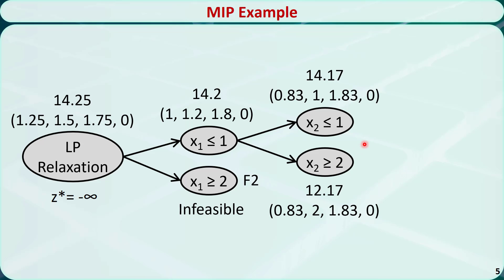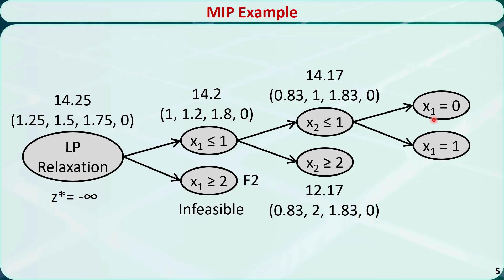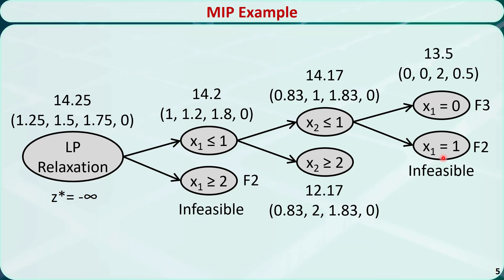Let's solve these two subproblems — these are their optimal solutions. Neither of the two subproblems is fathomed, so we need to continue this process and branch using x1 again for one branch since it is supposed to be an integer but is not. One branch should be x1 ≤ 0, but since x1 ≥ 0 from the problem formulation, the only possible value is x1 = 0. The other branch should be x1 ≥ 1, but since x1 ≤ 1 from a previous step, the only possible value is x1 = 1. Solving these: the x1 = 1 subproblem is infeasible and is fathomed based on test 2. The optimal solution to the x1 = 0 subproblem is x1 = 0, x2 = 0, x3 = 2, x4 = 0.5, and the z value is 13.5.